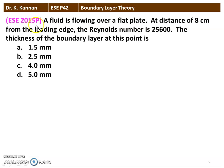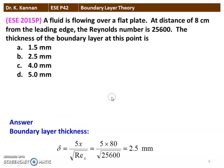Next question from the 2015 question paper: a fluid is flowing over a flat plate at a distance of 8 centimeters from the leading edge. The Reynolds number is 25,600. The thickness of the boundary layer at this point is calculated as: δ = 5x/√Re = 5 × 80 mm / √25,600 = 400/160 = 2.5 millimeters. The boundary layer thickness is option B, 2.5 millimeters.